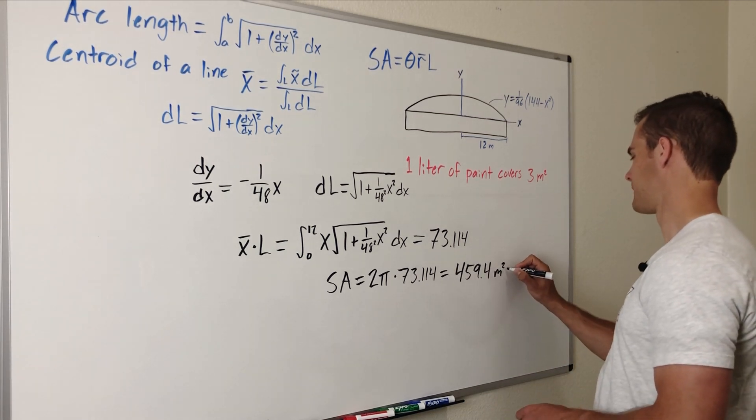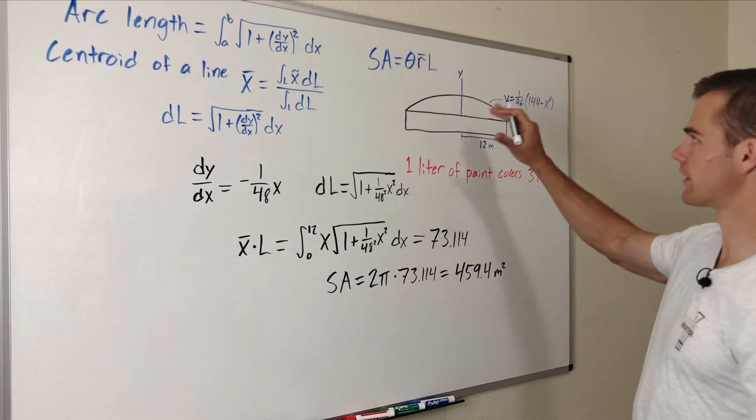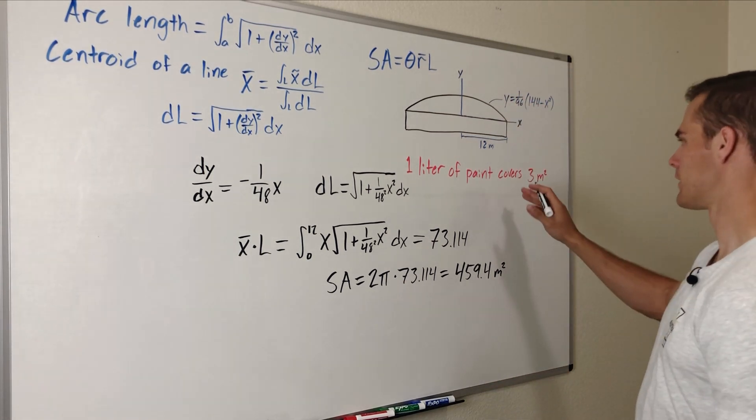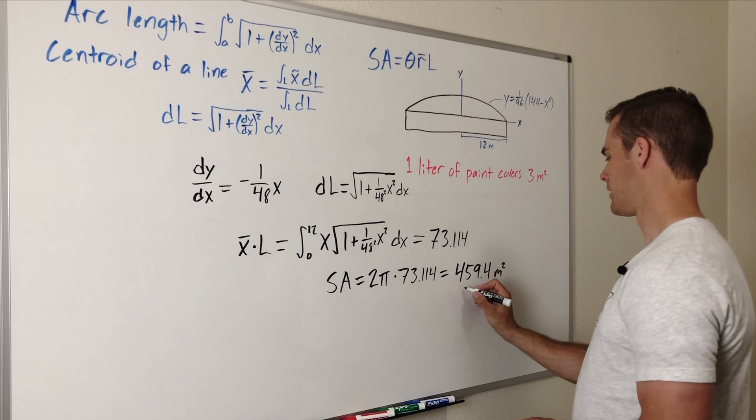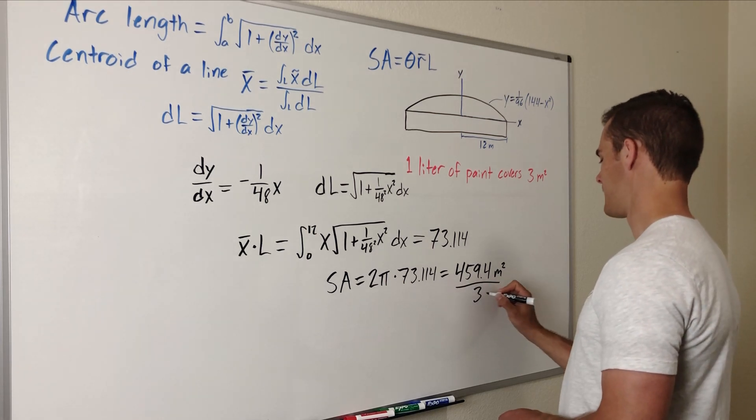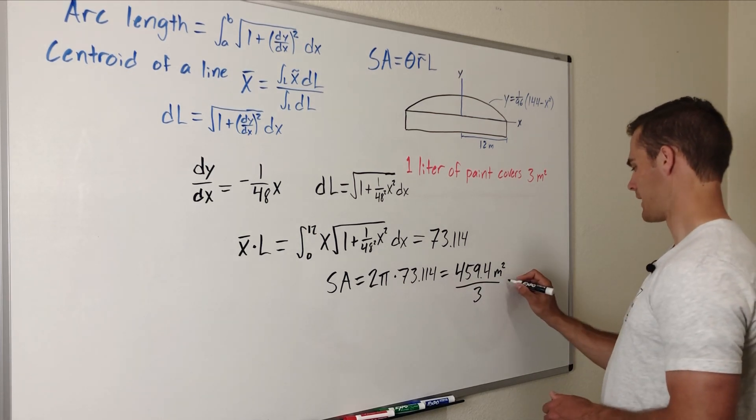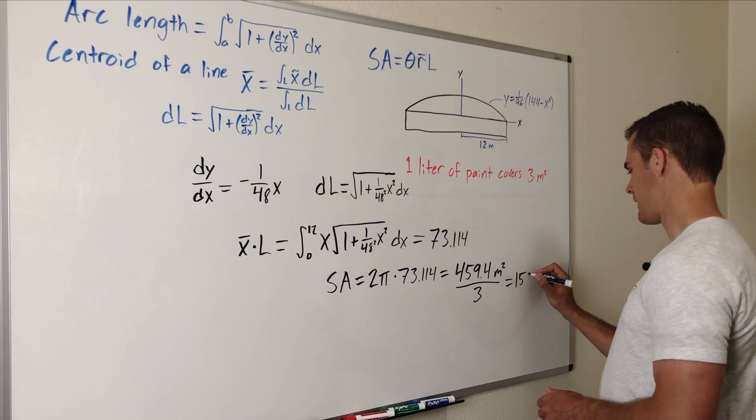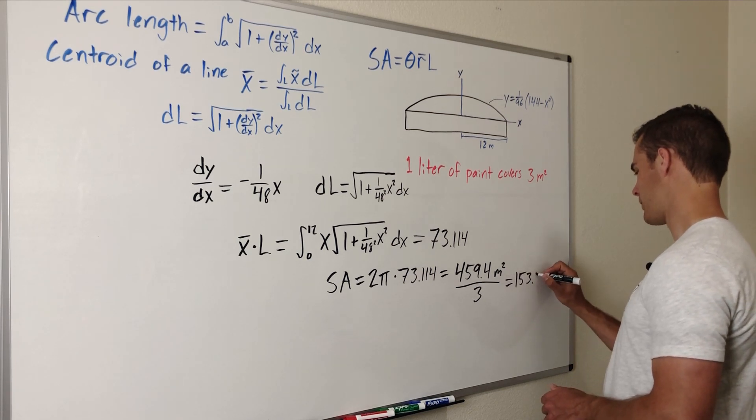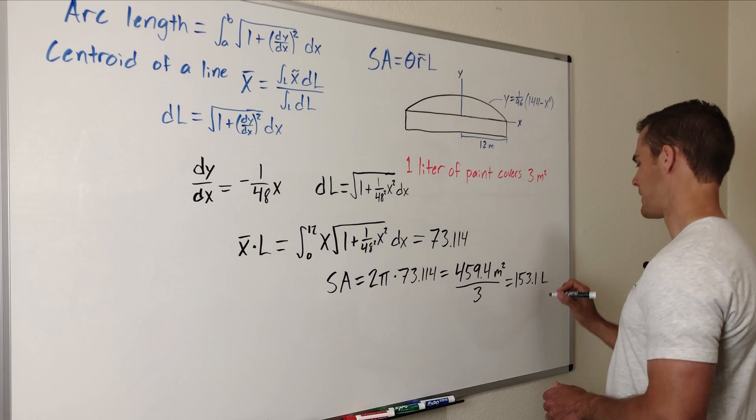And that's square meters, that is our surface area of our roof. Now to find out how much paint we need we'll just divide that by three and you end up getting that is 153.1 liters of paint.